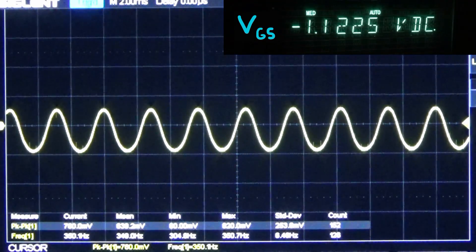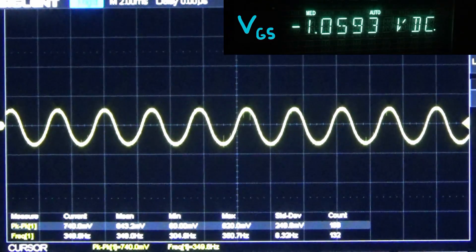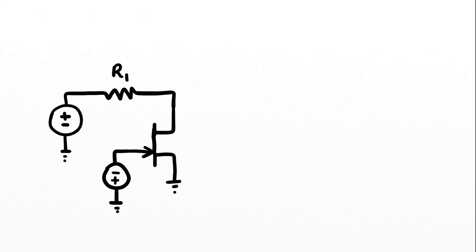Now that we understand the linear region of this JFET transistor, let's take a look at the circuit. Here's a simplified schematic. We have the input signal connected to R1, which is an input resistor connected to the drain of the JFET. We also have the negative gate to source voltage.